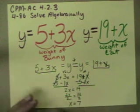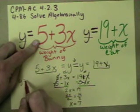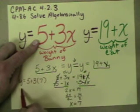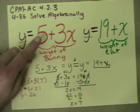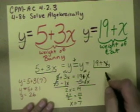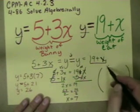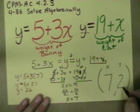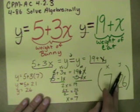Now that we have x equals seven, we plug it back into one of the original expressions to find y. Using y equals five plus three x, substituting seven: y equals five plus twenty-one, so y equals twenty-six. That matches what we got from the table and the graph. The answer is written as the point seven comma twenty-six, meaning x equals seven and y equals twenty-six.